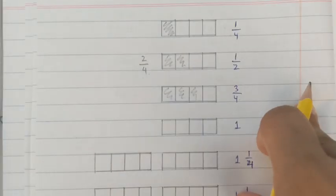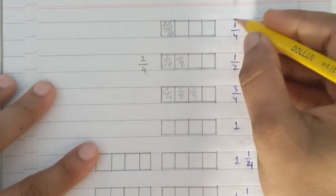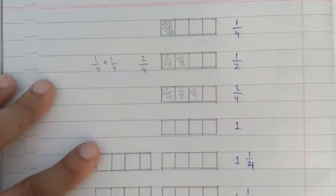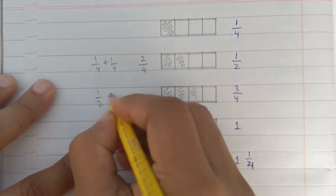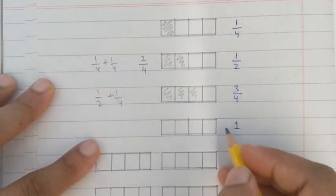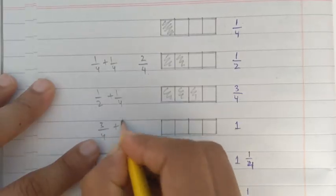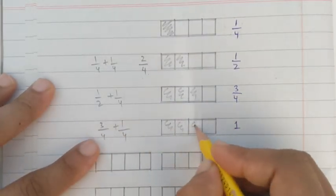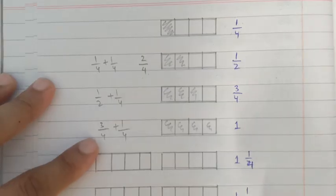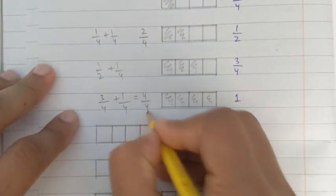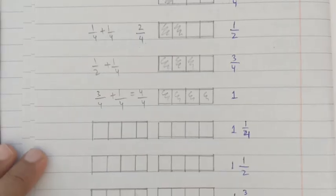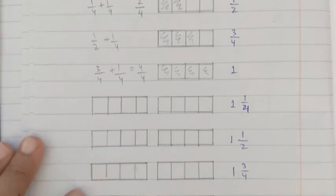In the third shape, one more quarter is shaded, so it becomes 3/4. Every time we are adding 1/4 to the previous term to get the next term. So: first term is 1/4, second is 1/4 + 1/4, third is 1/2 + 1/4, fourth is 3/4 + 1/4 = 4/4, which equals 1 whole.